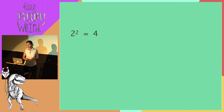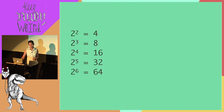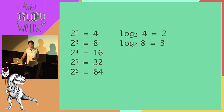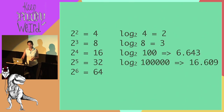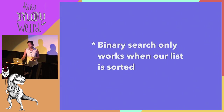So binary search is much more efficient, and we can know exactly the maximum number of steps it will take to find what we're looking for. The key takeaway from binary search is that it only works with sorted lists — it will not work otherwise.